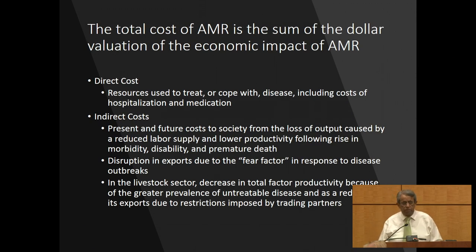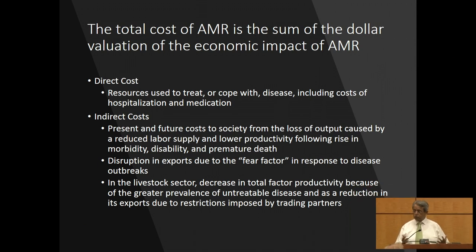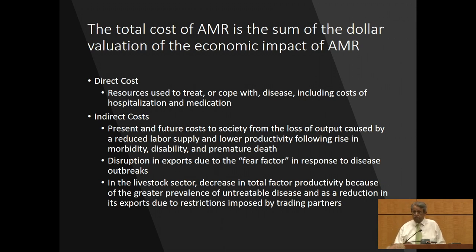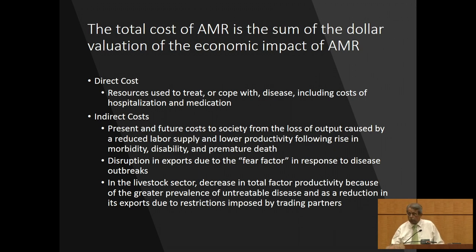The methodology we use is actually pretty straightforward. First, you split the costs into direct costs and indirect costs. The direct costs are simply the money used to treat people who fall ill — that's the healthcare expenditure. The indirect costs are all the others: present and future costs to society because of loss of output — the fall in labor supply, fall in productivity. If my production function has labor in it, there will be a fall in output. So you have to capture that, plus disruption in exports due to the fear factor, and in the livestock sector, a similar analysis.